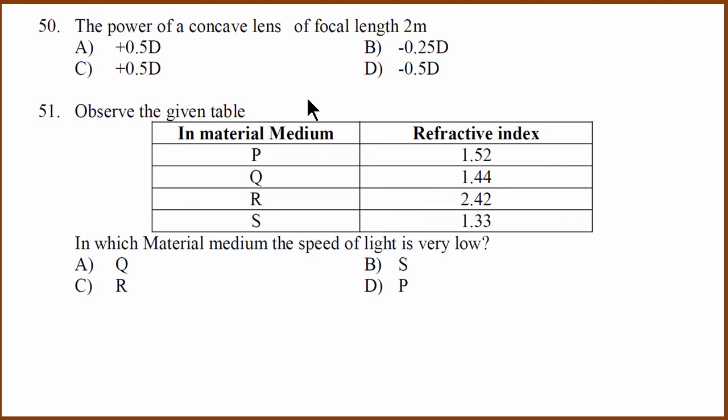Another light question. What happens to the power of concave lens of focal length 2 meter? The concave lens focal length is negative. So therefore, when we find the power, we have to do 1 by focal length. Hence, we will get the answer minus 0.5 diopter.